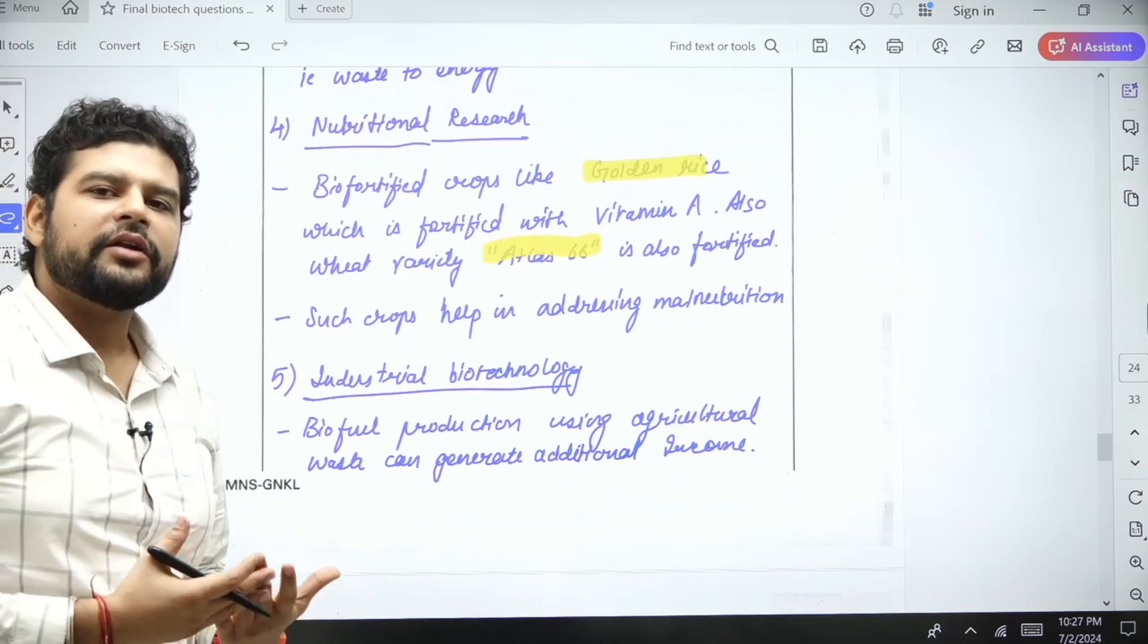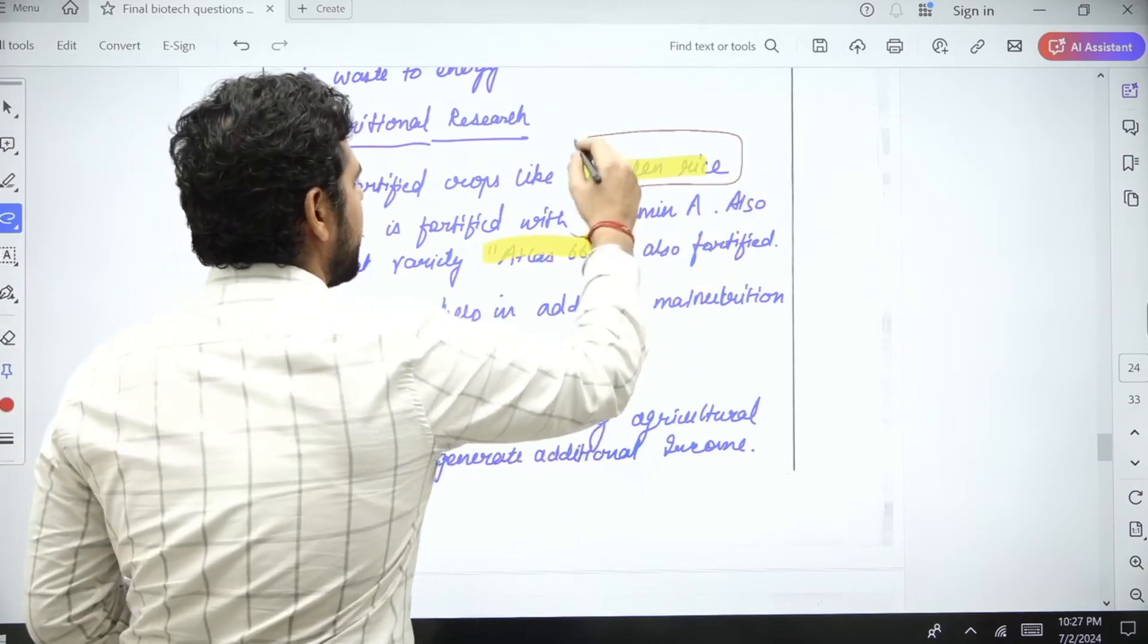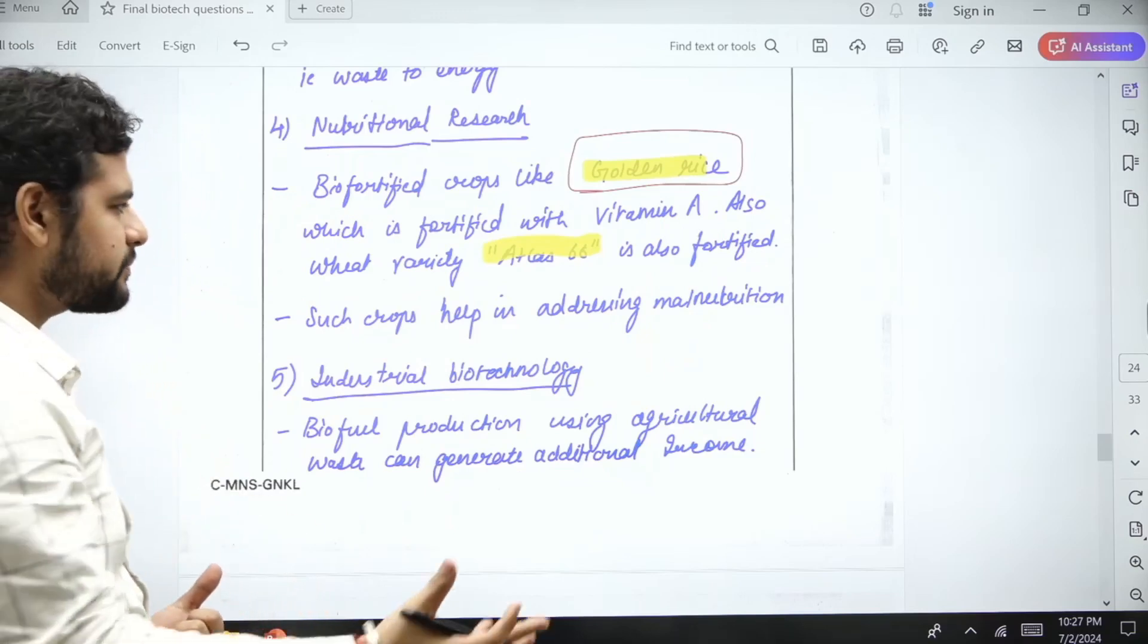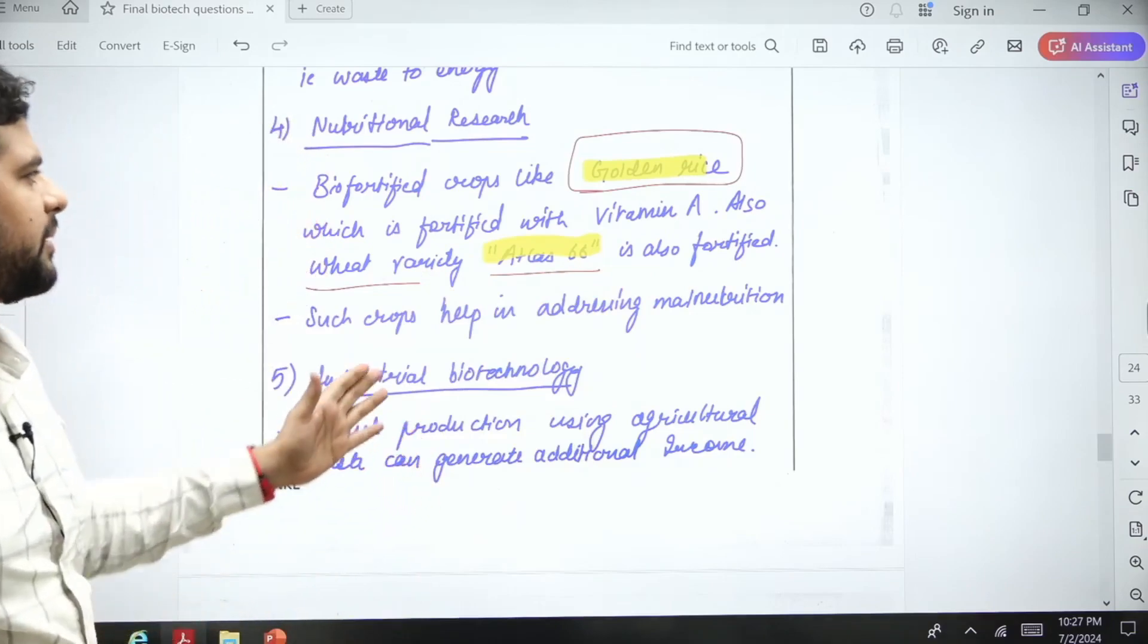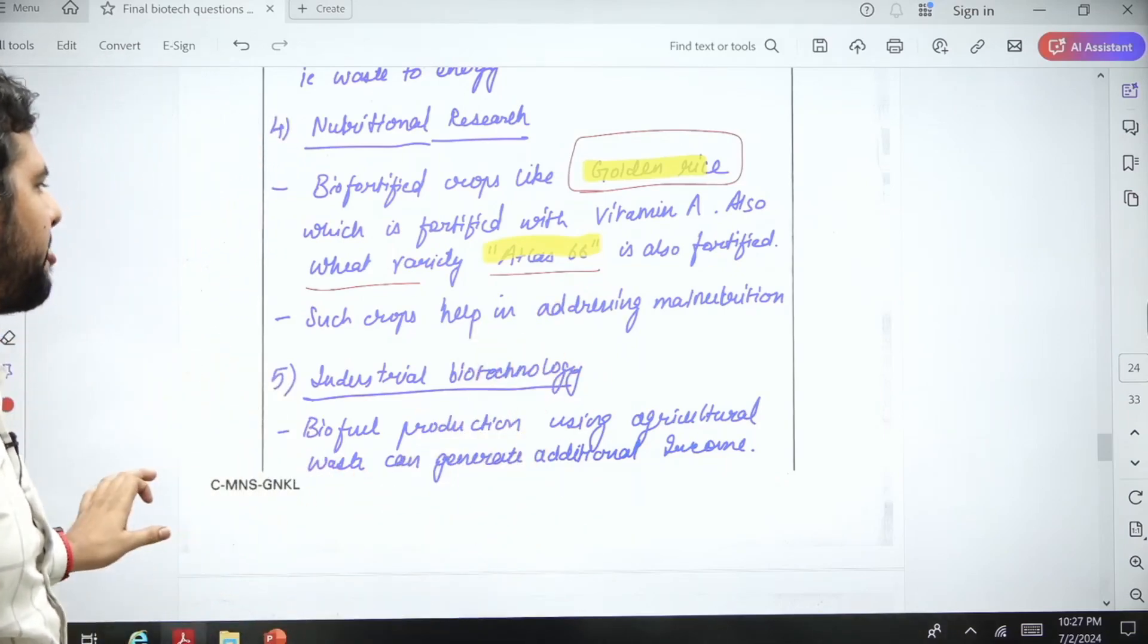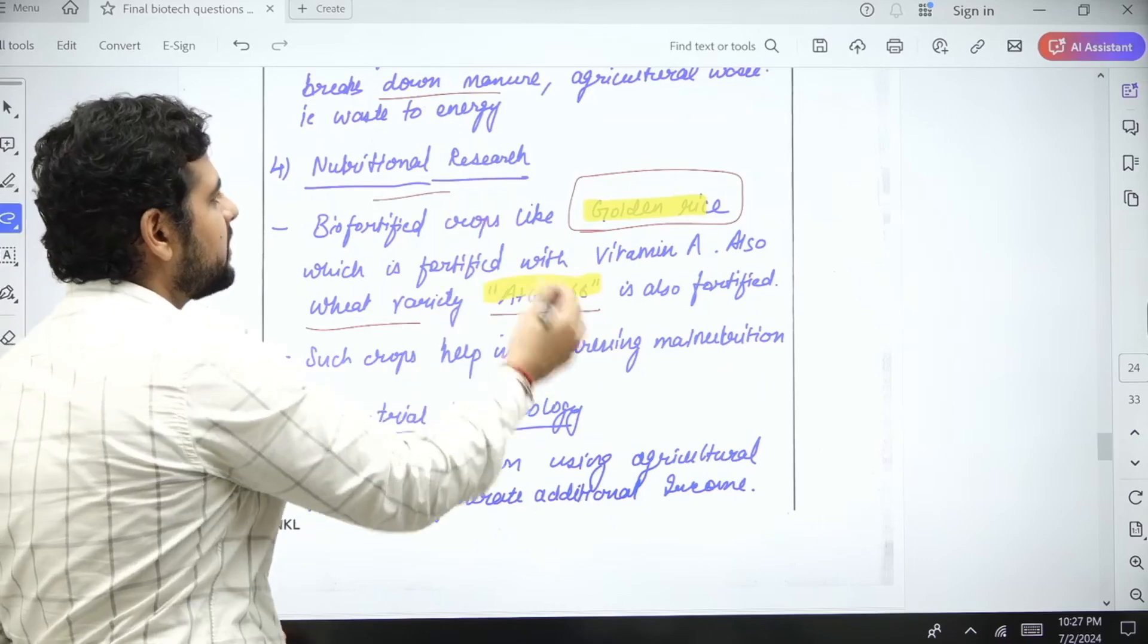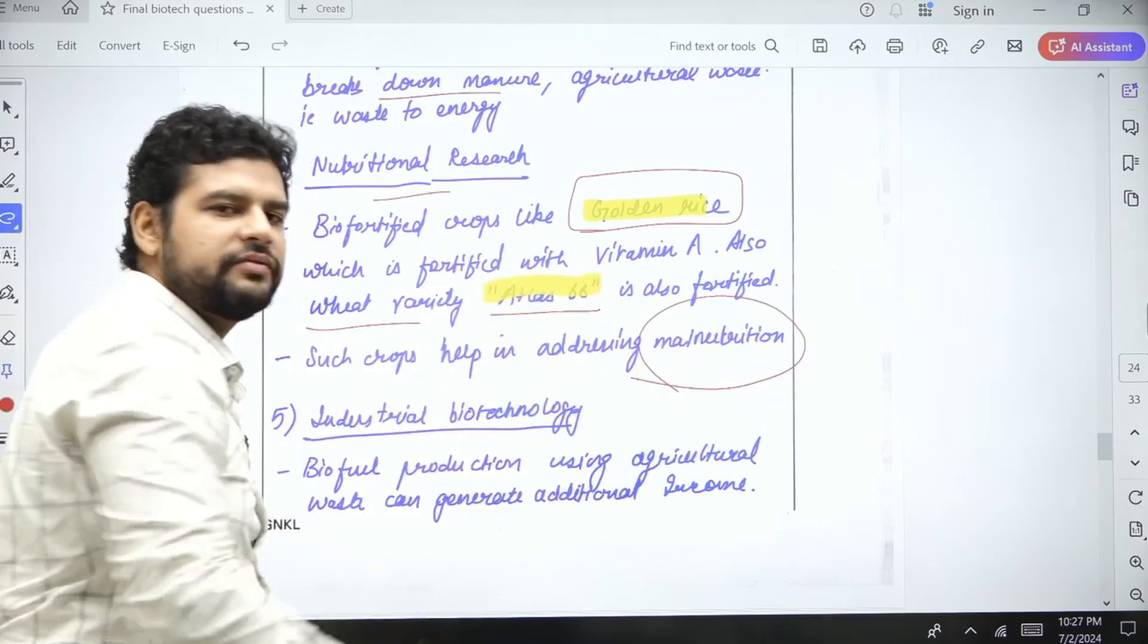A lot of biofortified crops are being developed like golden rice, which has vitamin A. Also, there is a biofortified wheat variety called Atlas 66. Many people don't write this example; many people write golden rice. This is how you can differentiate your content from the content we have brought for you. All these crops help in the nutritional research. These crops help in addressing malnutrition, which is a big problem for India.